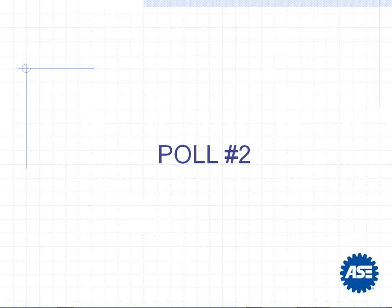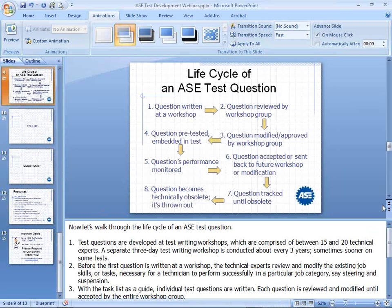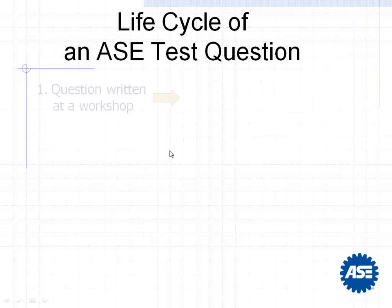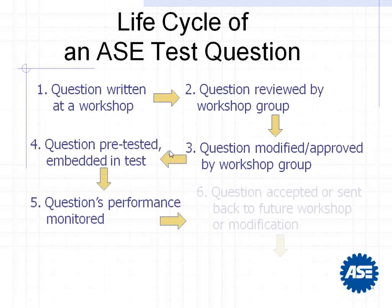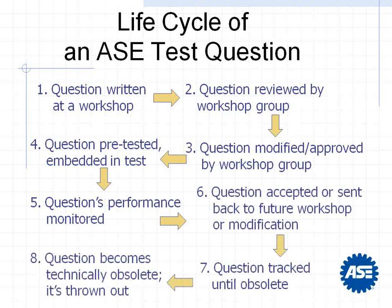There are a couple of folks who asked specifically what standard denotes proper question performance. The question that's written in a workshop is reviewed by the workshop group — a group of subject matter experts from across the country. They vary from experts that work in manufacturer-specific dealerships, training departments, independent repair facilities, dealership repair facilities, and equipment manufacturers. It's a pretty diverse group. When they write a question, it has to fit that task list that really is the job description for a candidate seeking their credential. Once that's done, they approve it, modify and approve it, and make it as generic as possible.